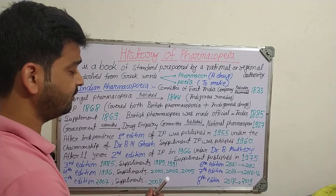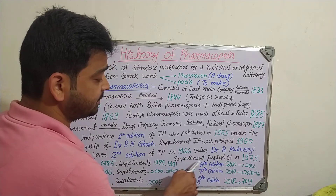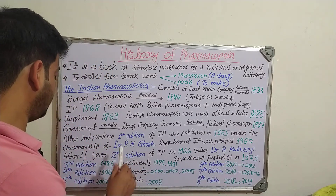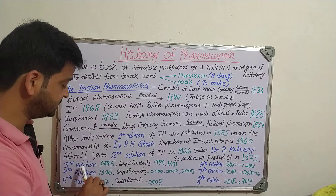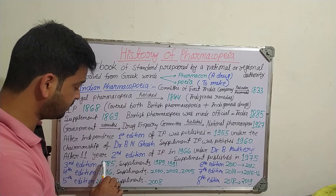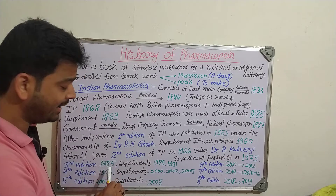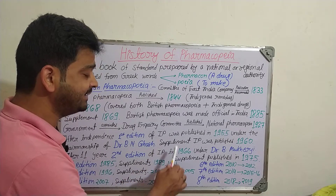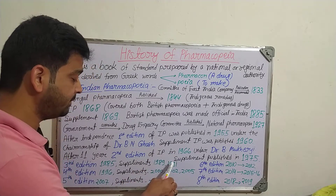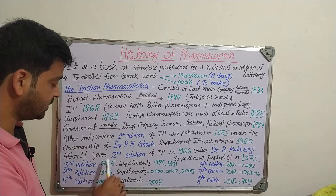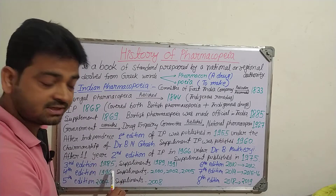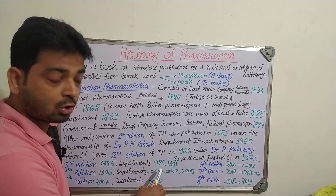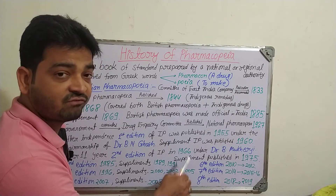The supplement of the second edition was published in 1975. The third edition was published in 1985, with supplements in 1989 and 1991 — two supplements came. The fourth edition was published in 1996, and its supplements were published in 2000, 2002, and 2005.